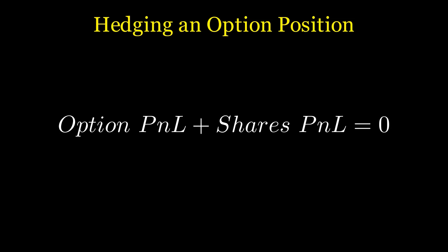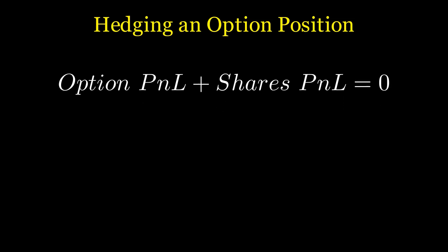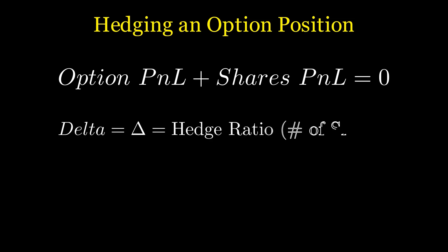Essentially, it's about adjusting the number of shares to offset the changes in the price of the option, making sure that the value of the position remains neutral. Consequently, this number is actually represented by the Greek delta, which indicates how many shares are needed to hedge the position.